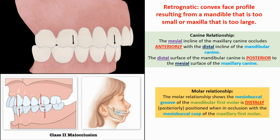Canine relationship: the mesial incline of the maxillary canine occludes anteriorly with the distal incline of the mandibular canine. The distal surface of the mandibular canine is posterior to the mesial surface of the maxillary canine by at least the width of a premolar.